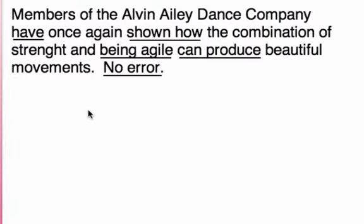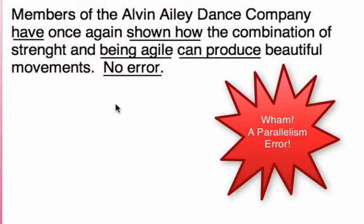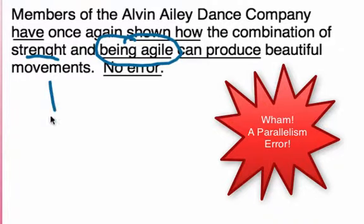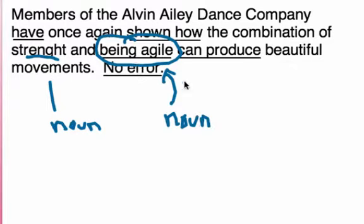Number three of ten: Members of the Alvin Ailey Dance Company have once again shown how the combination of strength and being agile can produce beautiful movements. We have a parallelism error. The correction is 'the combination of strength and agility' — we want a noun paired with another noun, not 'being agile.'